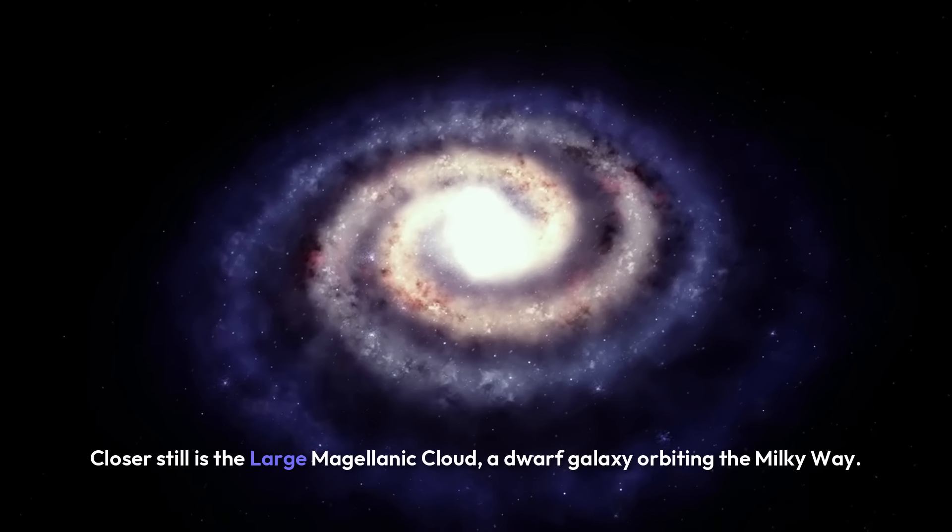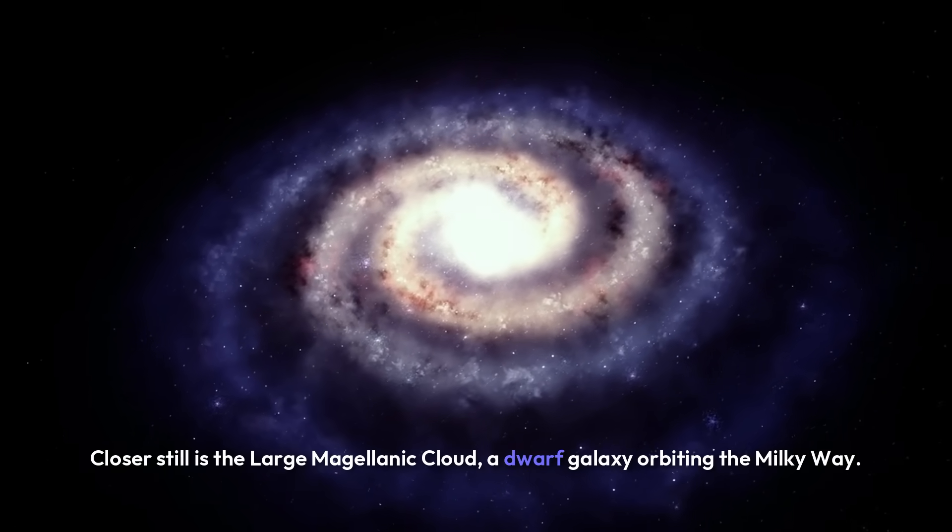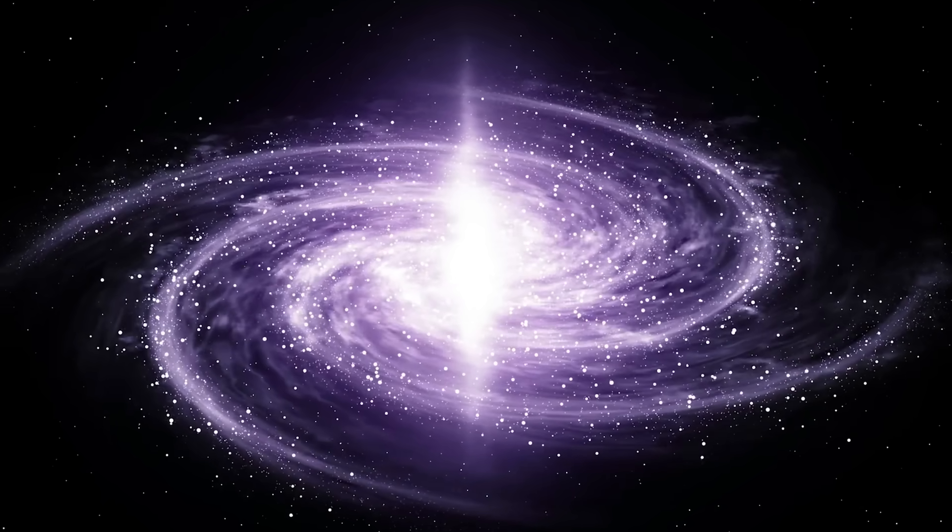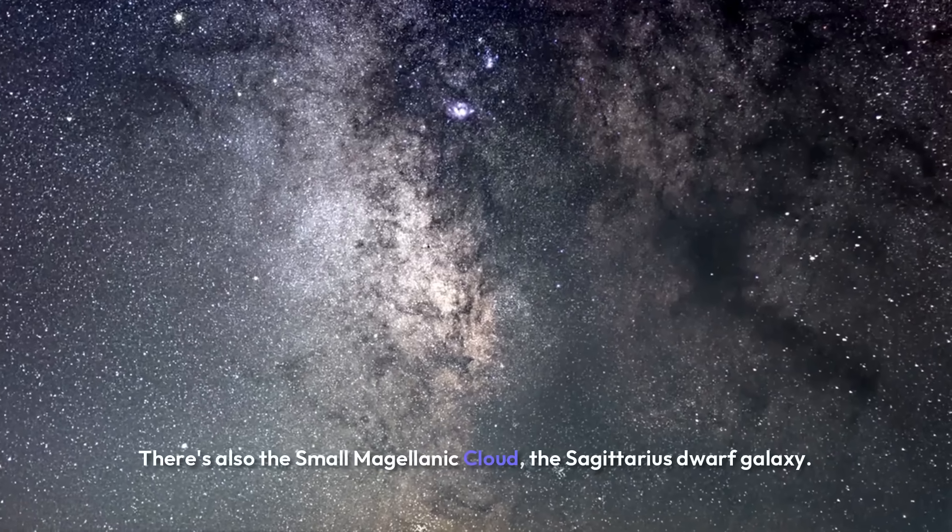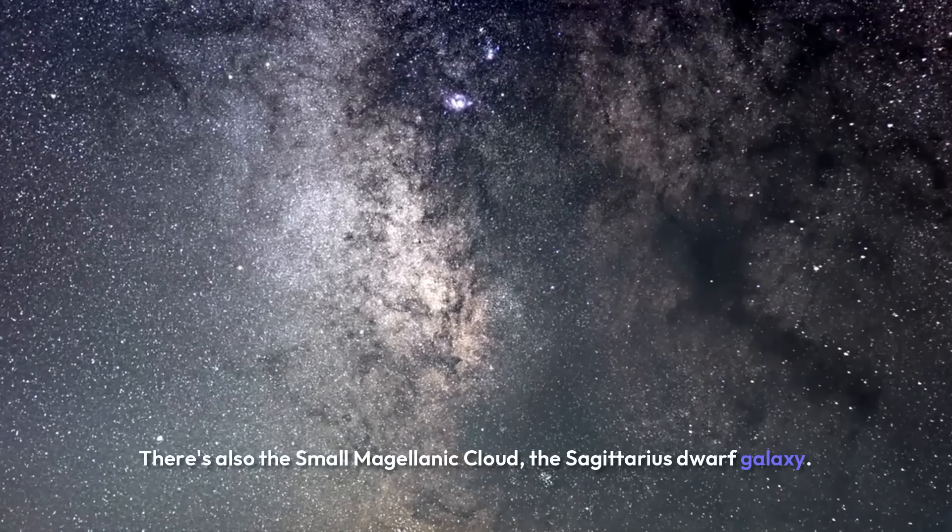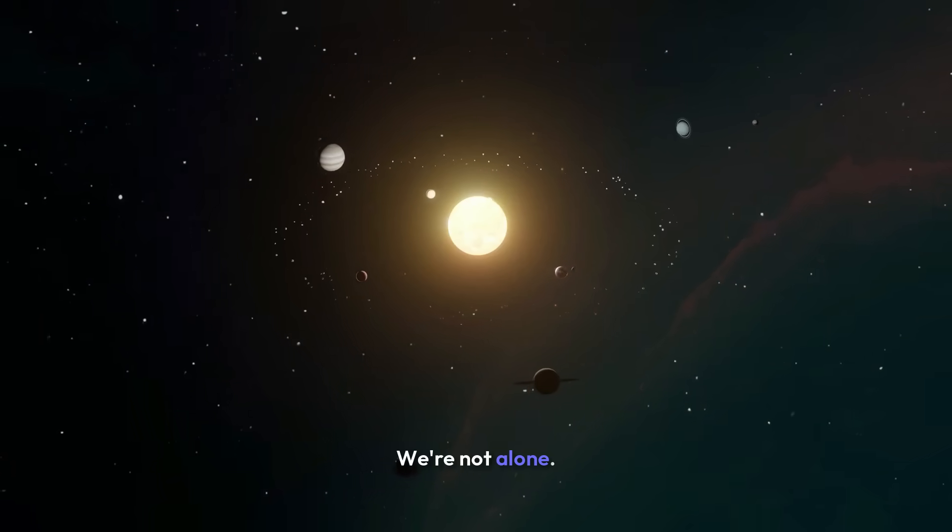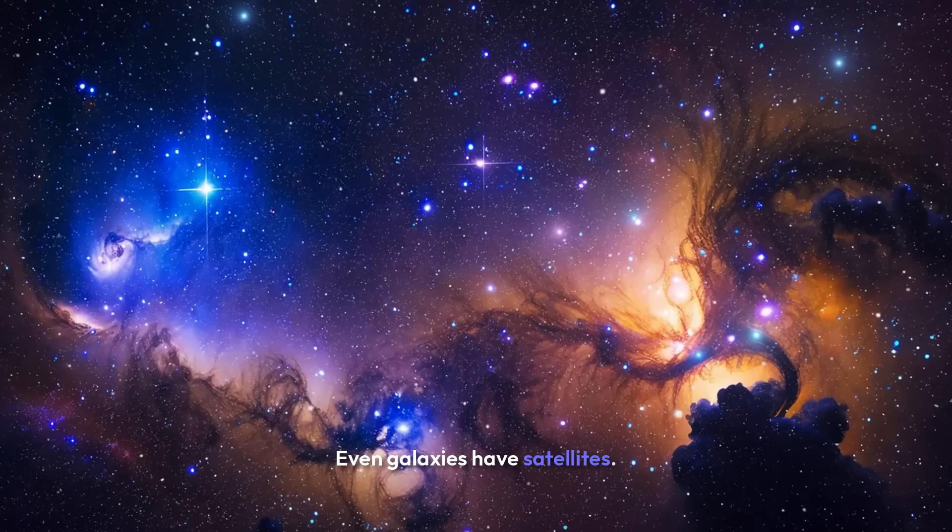Closer still is the Large Magellanic Cloud, a dwarf galaxy orbiting the Milky Way. It's only 160,000 light years away. There's also the Small Magellanic Cloud, the Sagittarius dwarf galaxy, and over 50 smaller ones orbiting us. We're not alone. Even galaxies have satellites.